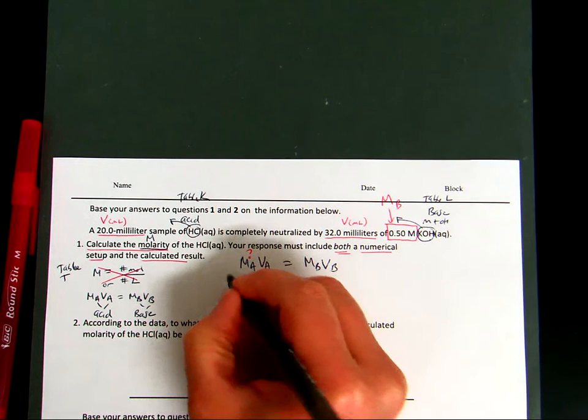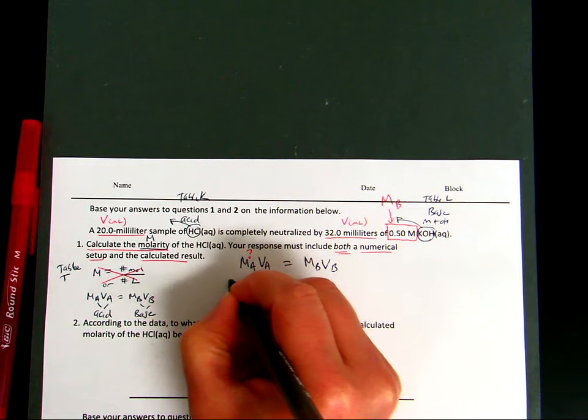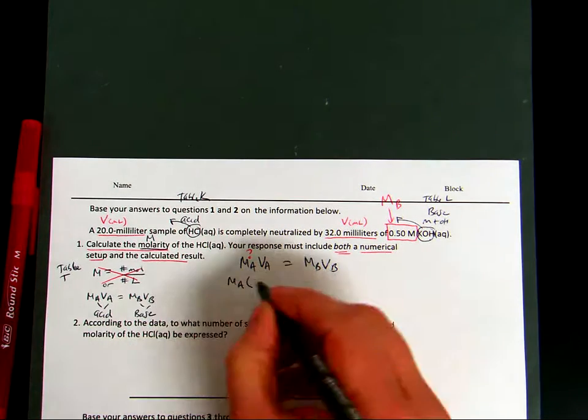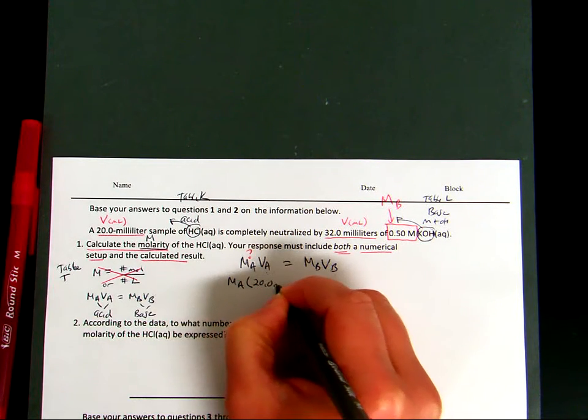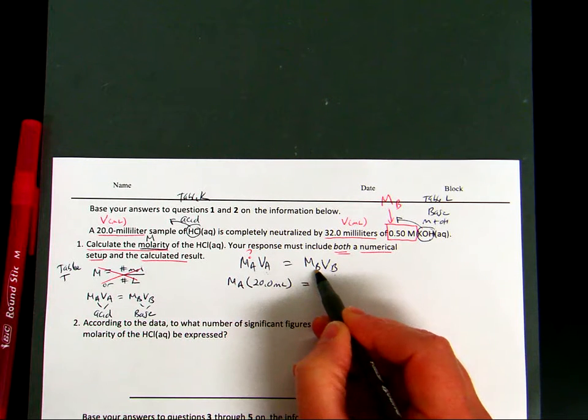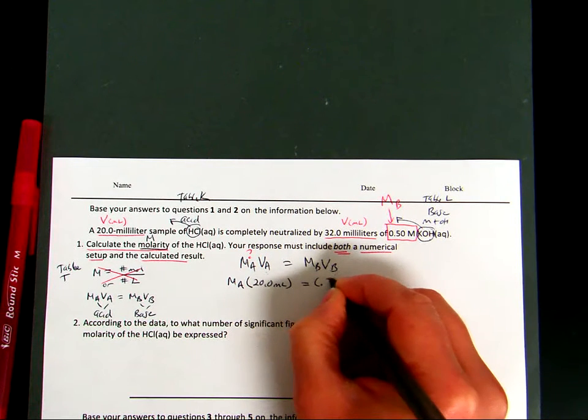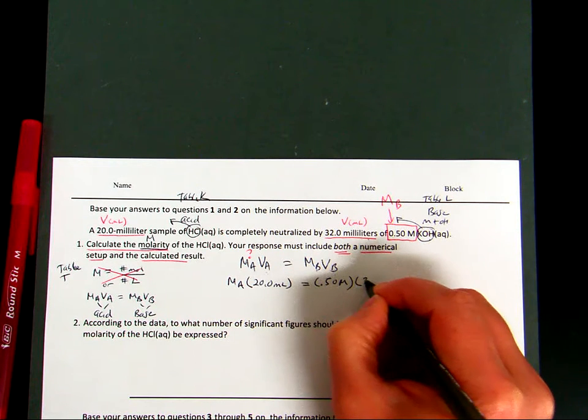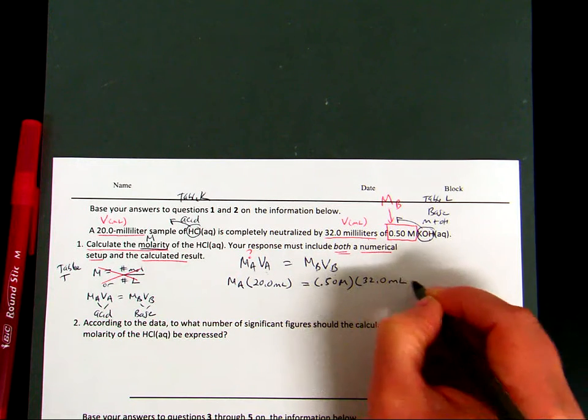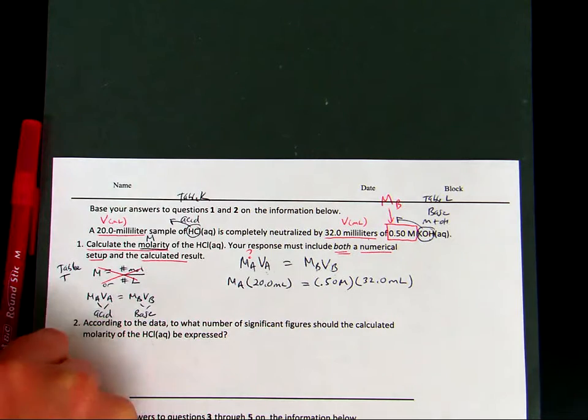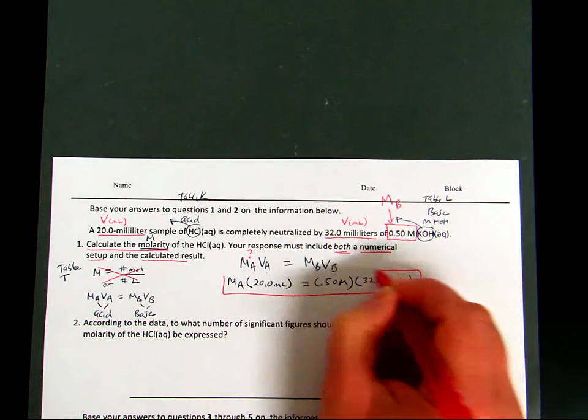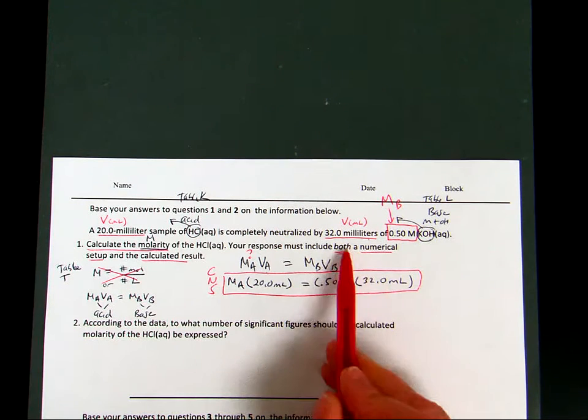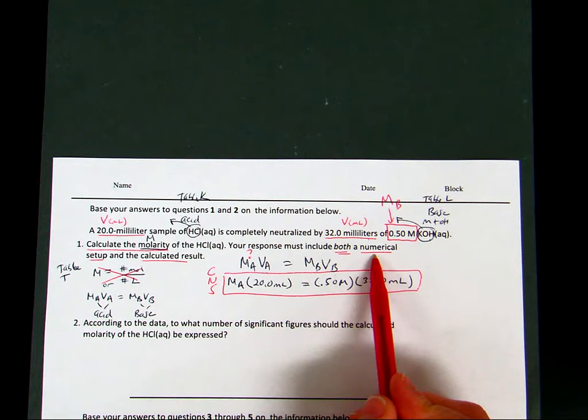So showing my correct numerical setup. So I'm going to leave it as MA, and I'm going to show it multiplied by the VA as 20.0 milliliters equals the MB, the 0.50 capital M, multiplied by its volume of 32.0 milliliters. So right there, this is my correct numerical setup. So correct numerical setup. First criteria to earning my points is completed.